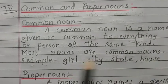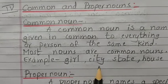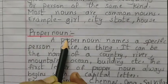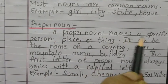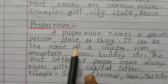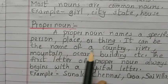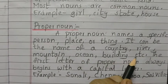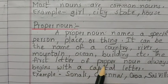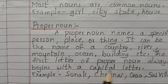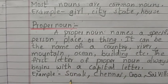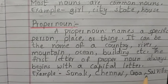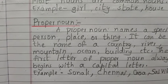Leave one line. Proper noun: a proper noun names a specific person, place or thing. It can be the name of a country, river, mountain, ocean, building, etc. The first letter of a proper noun always begins with a capital letter. Example: Sonali — S capital; Chennai — C capital; Goa; Sai Villa — it is a house name. You can copy this from the workbook, page number 45.